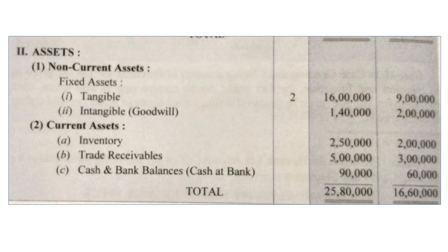Trade receivables are also current assets and they are also increasing — from rupees 3 lakhs last year to rupees 5 lakhs this year. This amount will be subtracted in cash flows from operating activities. Cash and bank balance is given as item six. The complete opening amount of rupees 60,000 will be taken, and rupees 90,000 will be the result after preparation of the complete cash flow statement covering operating, investing, and financing activities.